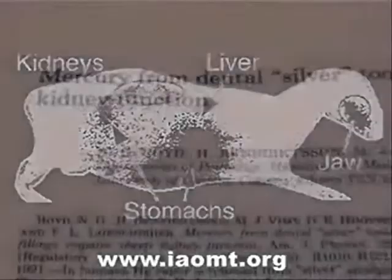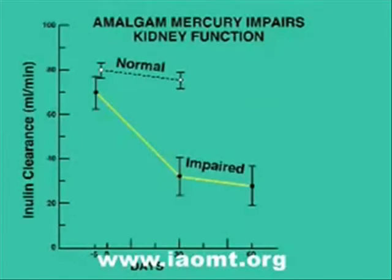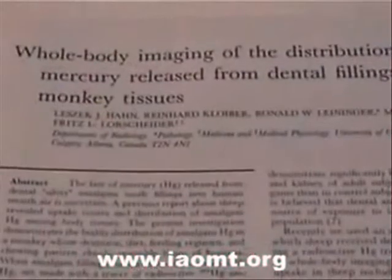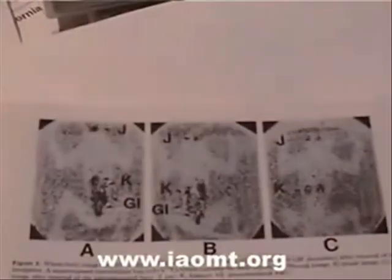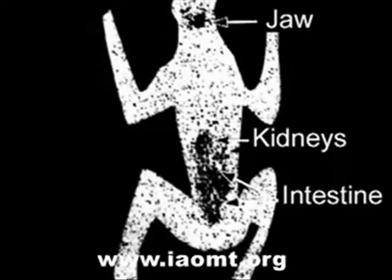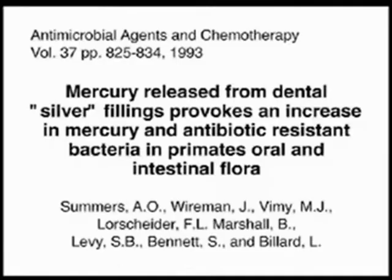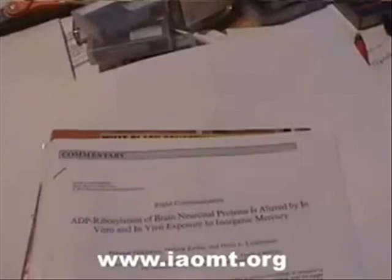This should be of concern for everyone. Then they measured that the sheep's kidneys dropped in their ability by 60% to clear inulin, an indication of kidney malfunction. Whole-body imaging of monkeys found exactly the same thing. Proponents of amalgam fillings claim that sheep chew too much — but monkeys had mercury in their jaw, kidneys, liver, intestine, and heart. Further research found antibiotic-resistant bacteria that cropped up in the intestines within two weeks of receiving these mercury-leaking fillings. Further studies have found damage to the ADP ribosylation of brain neuron proteins.